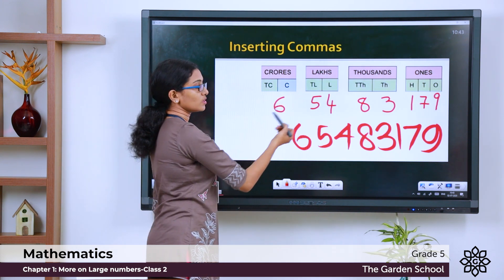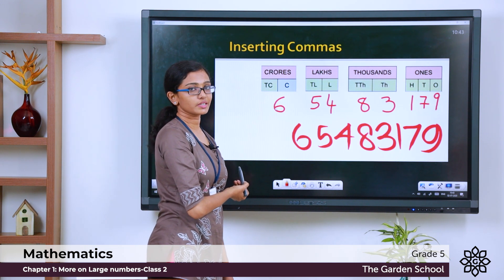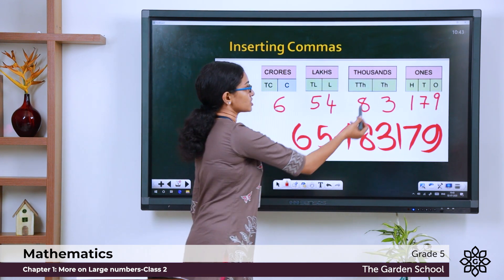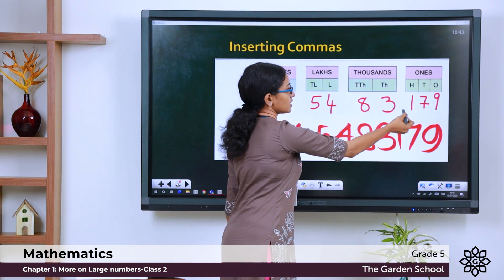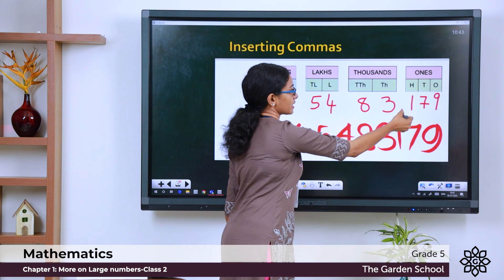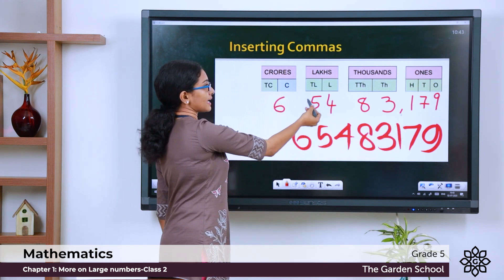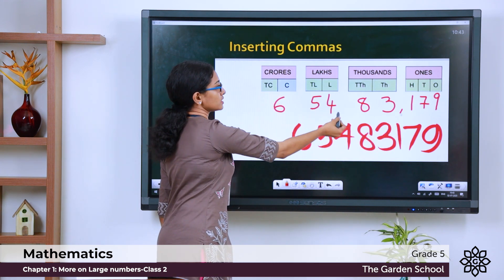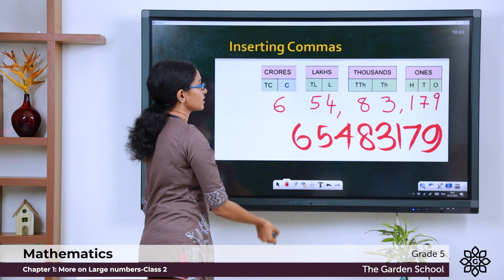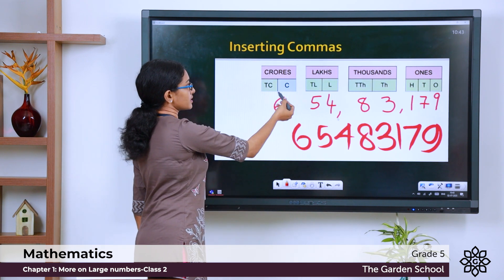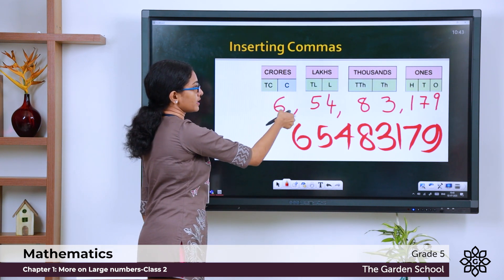Now let us insert commas to separate the periods. To separate the 1s and 1000s, let us put a comma here. To separate the lakhs and 1000s, let us put a comma here. To separate the crores and lakhs, let us put a comma here.